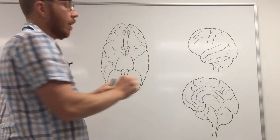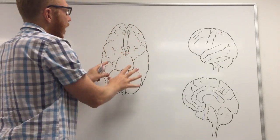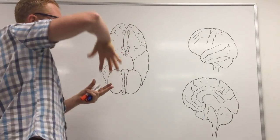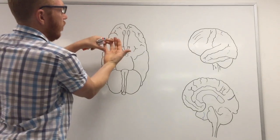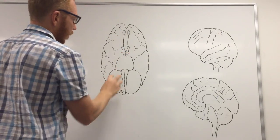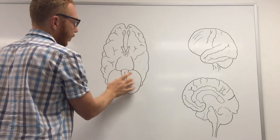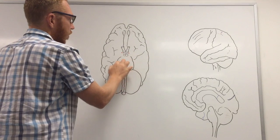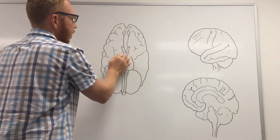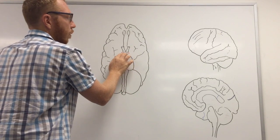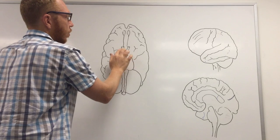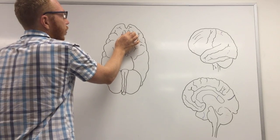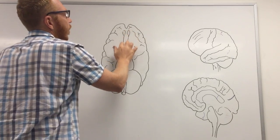Before we start, let's just get our orientation. Here we've got the brain on the underside — it's like you've pulled the brain out from the skull and looked underneath it. We've got the cerebellum, the medulla, the spinal cord coming up from the medulla, the pons, and the midbrain sitting here. We've also got the mammillary bodies, the pituitary stalk, the optic chiasm going to the optic nerve, and then the olfactory bulb and tracts.